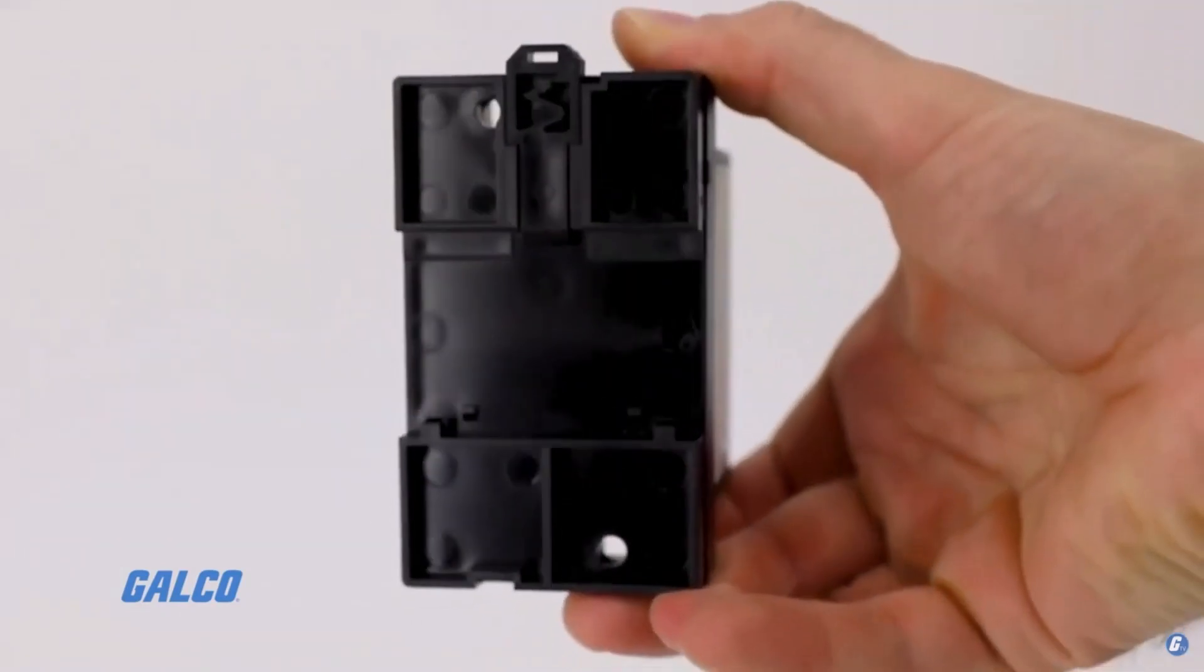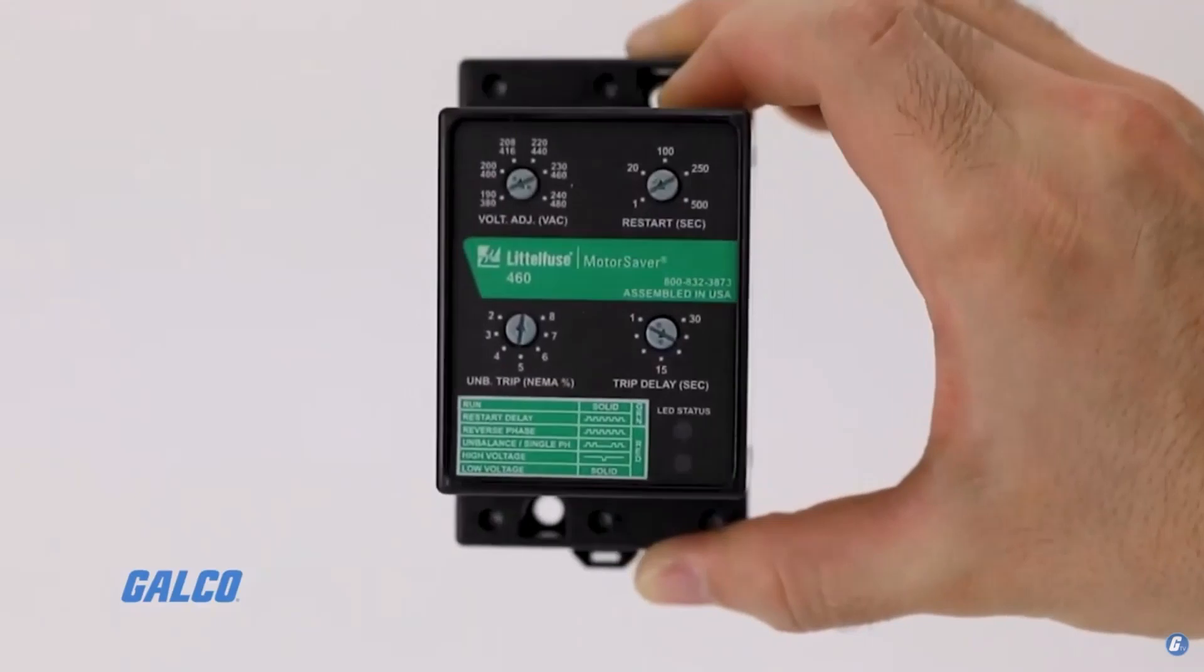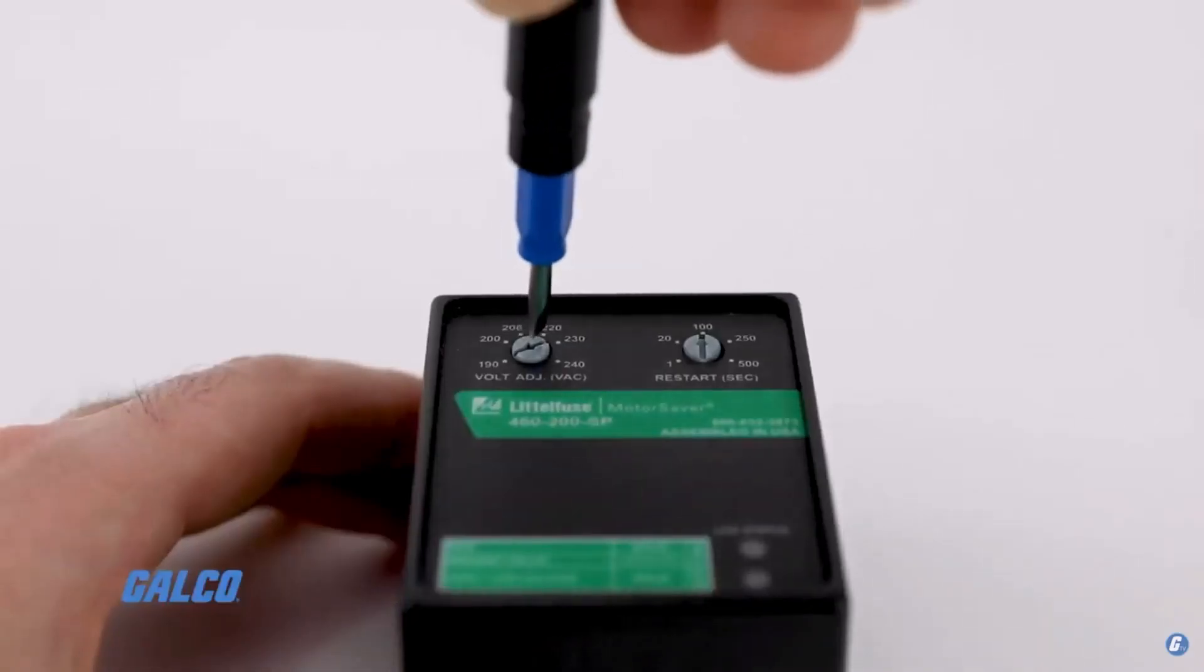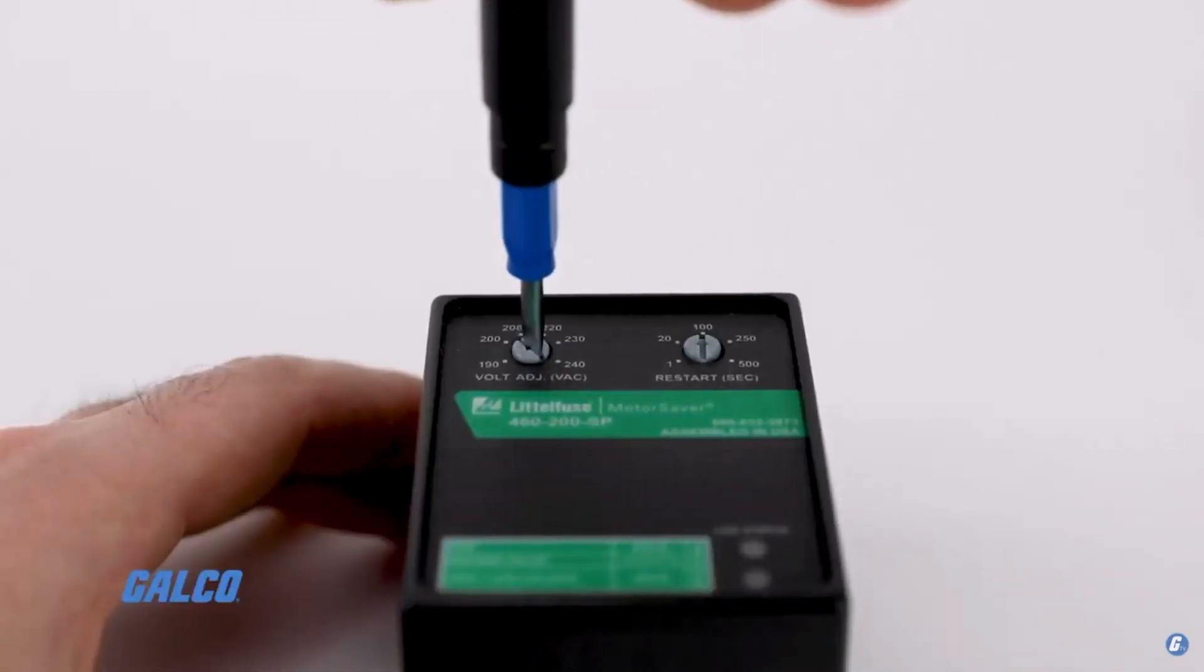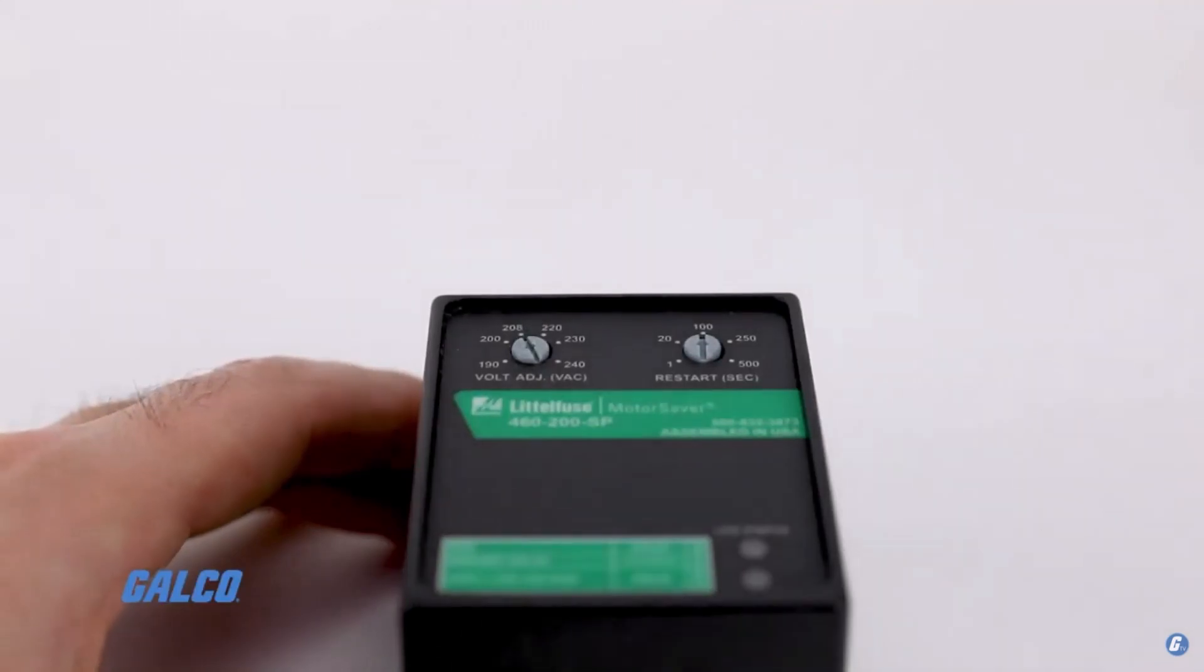The relay provides a user-selectable nominal voltage setpoint and automatically senses line voltage for rapid commissioning.